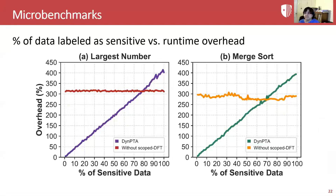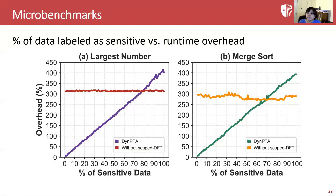Finally, we evaluated how DINPTA's runtime overhead changes as the percentage of data labeled sensitive changes, using two microbenchmarks: one that computes the largest number among a list of arrays, and another that performs merge sort on a list of arrays. The percentage of arrays annotated as sensitive is varied and the overhead is measured. In both graphs, the flat line represents the overhead if we use static analysis alone without any DFT. The benefits of DINPTA diminish when the majority of data is marked as sensitive — beyond 60 to 70% — because more operations then require both DFT label lookups and expensive AES transformations.